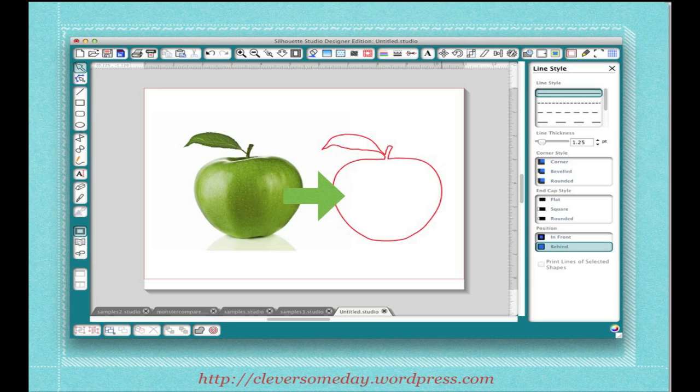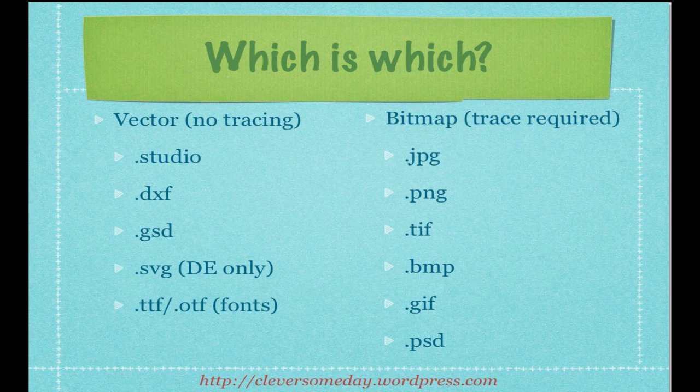Tracing, also called auto-tracing or vectorizing, is the process we use to translate the pixel data in a bitmap image into a simple track for your die cutter's blade to follow. The designs you get from the Silhouette online store or other designs in Studio, DXF, GSD, or SVG format are already vectorized and don't need to be traced. The same is true for the fonts you have loaded on your computer. You will need to trace when you want to cut images you bring in from other sources that are in JPEG, PNG, TIFF, BMP, GIF, or PSD formats.